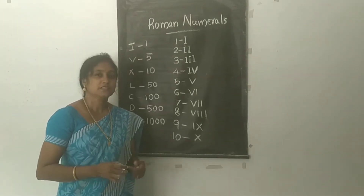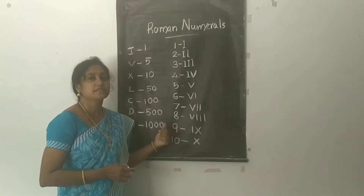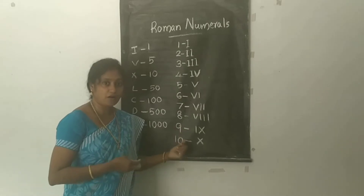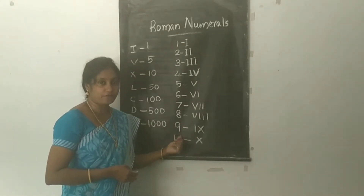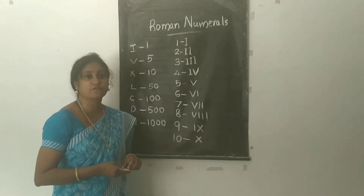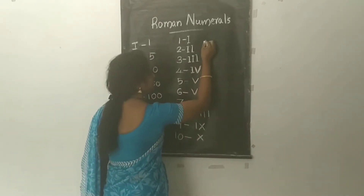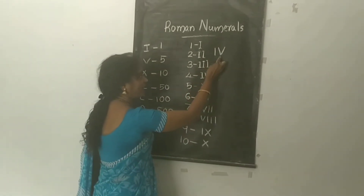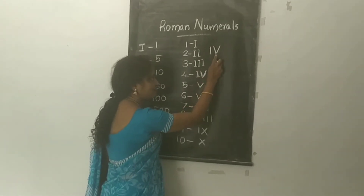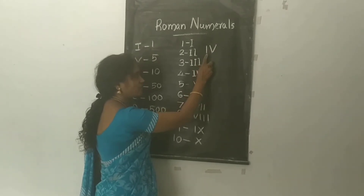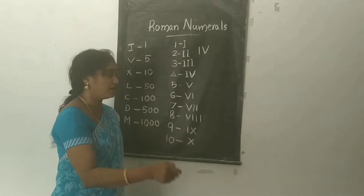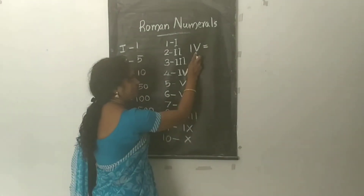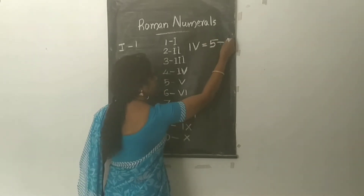The third rule: if a symbol of smaller value is written on the left side of a symbol of greater value, its value is subtracted from the greater value. For example, IV — I is the smallest symbol and V is the greatest. Since I is on the left side of V, we subtract: 5 minus 1 equals 4.